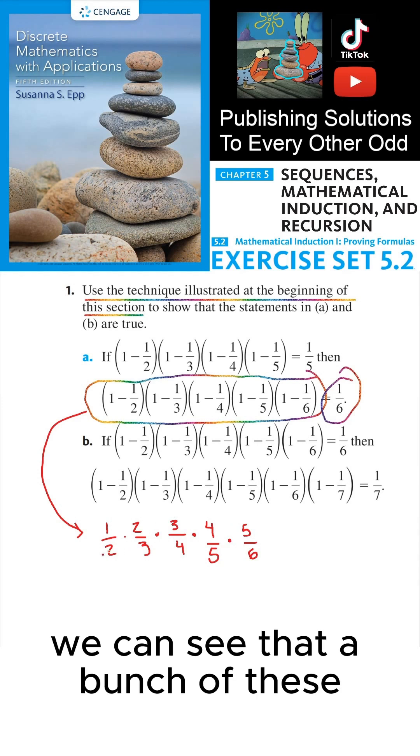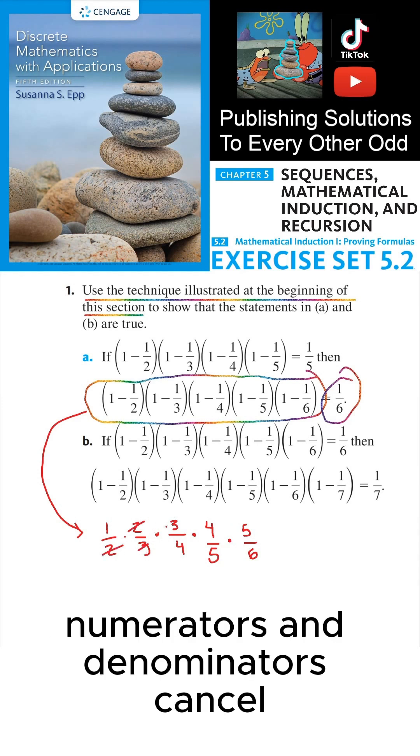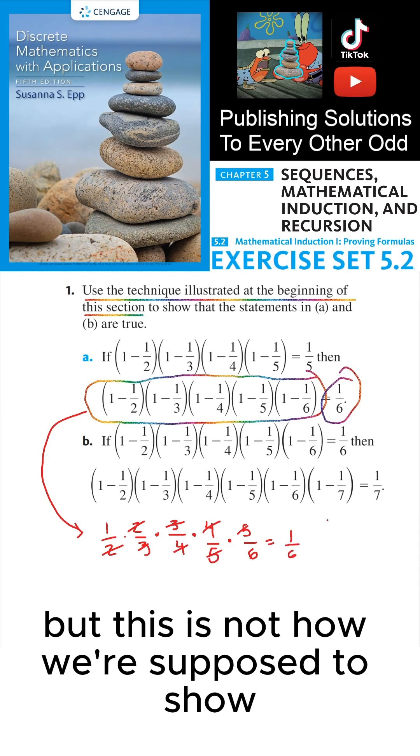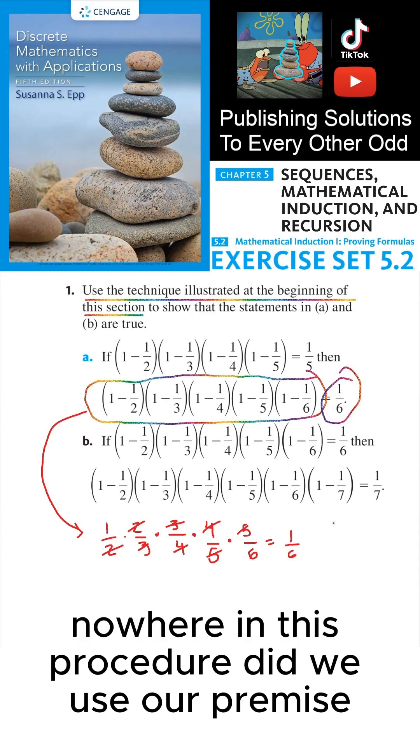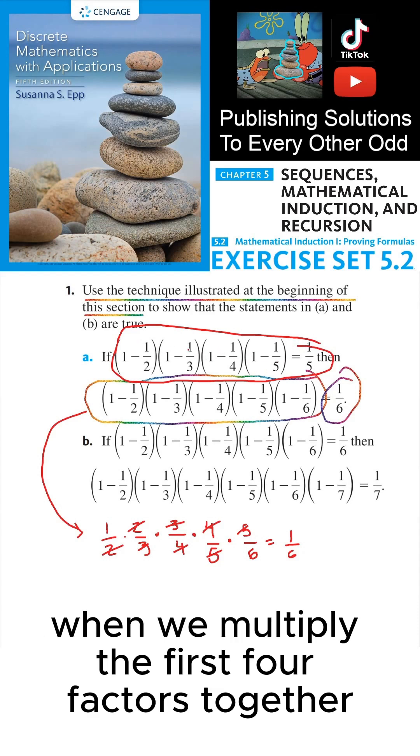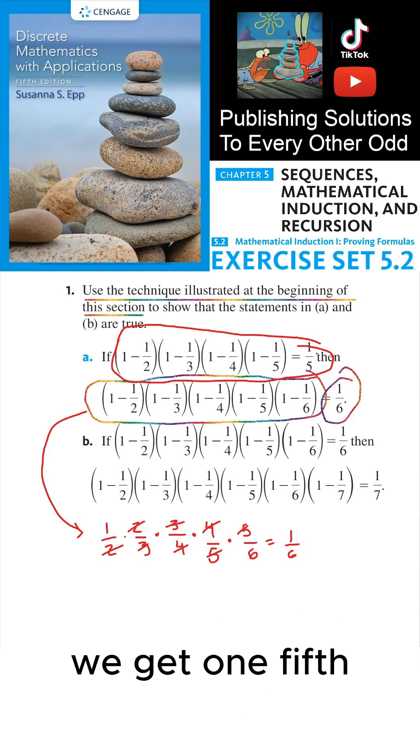Now algebraically, we can see that a bunch of these numerators and denominators cancel and we're left with 1/6. But this is not how we're supposed to show that this is true. Nowhere in this procedure did we use our premise, which tells us what we get when we multiply the first four factors together. We get 1/5.